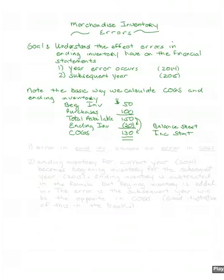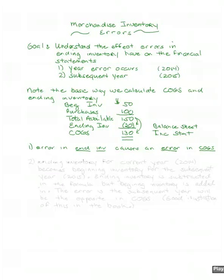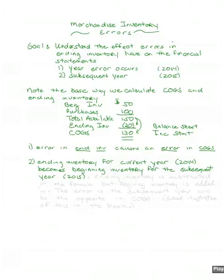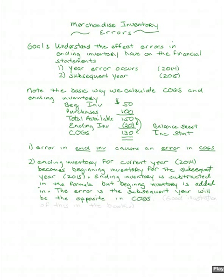An error in ending inventory causes an error in cost of goods sold because one is subtracted from total available to calculate the other. Also, the ending inventory for the current year becomes the beginning inventory of the subsequent year — ending inventory for 2014 becomes beginning inventory for 2015. Since ending inventory is subtracted in our formula but beginning inventory is added in, the error in the subsequent year will be in the opposite direction in cost of goods sold.